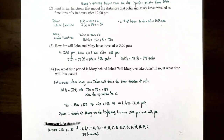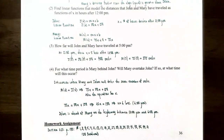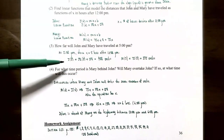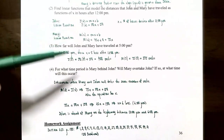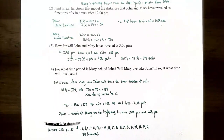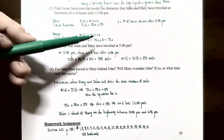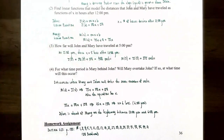Part three: how far will John and Mary have traveled at 5 p.m.? Since 5 p.m. is five hours after 12 p.m., substitute x = 5. John's distance: J(5) = 50(5) + 150 = 400 miles west of Lansing. Mary's distance: M(5) = 75(5) = 375 miles west of Lansing. So at 5 p.m., John has traveled farther — 400 miles compared to Mary's 375 miles.